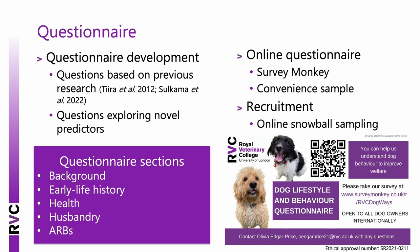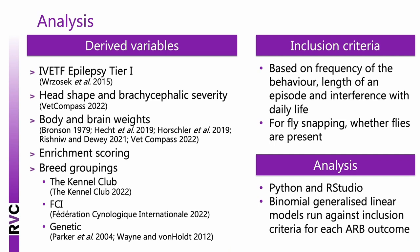The questionnaire was split into two sections. The background section collected owner demographics and dog information including age, sex, neuter status, and breed, followed by relevant health history (neurological conditions, seizures, ophthalmic disease), early life experiences (breeding environment or rescue), and current lifestyle (enrichment provision and social environment). A second section covered each ARB behaviour — presentation, reinforcement history, and potential triggers. The questionnaire was online via SurveyMonkey using convenience sampling through online snowball sampling, leaflets at Crufts 2022, and a Pandemic Puppy RVC mailing list.